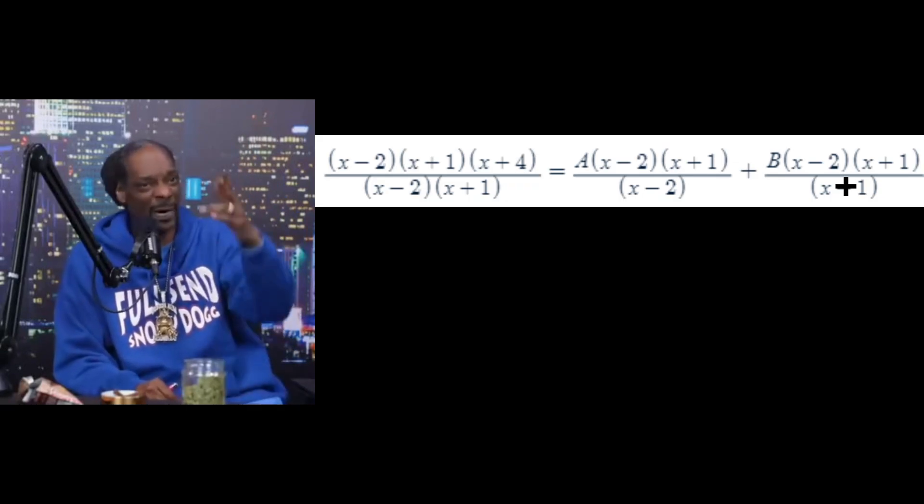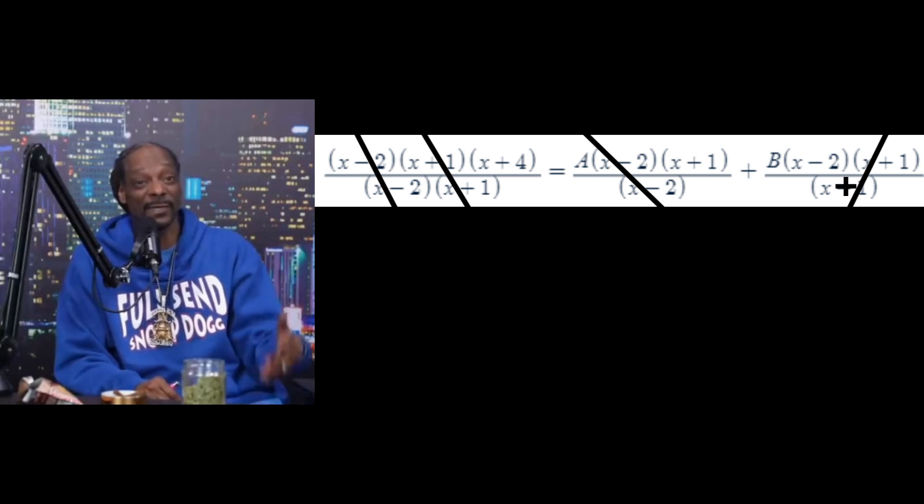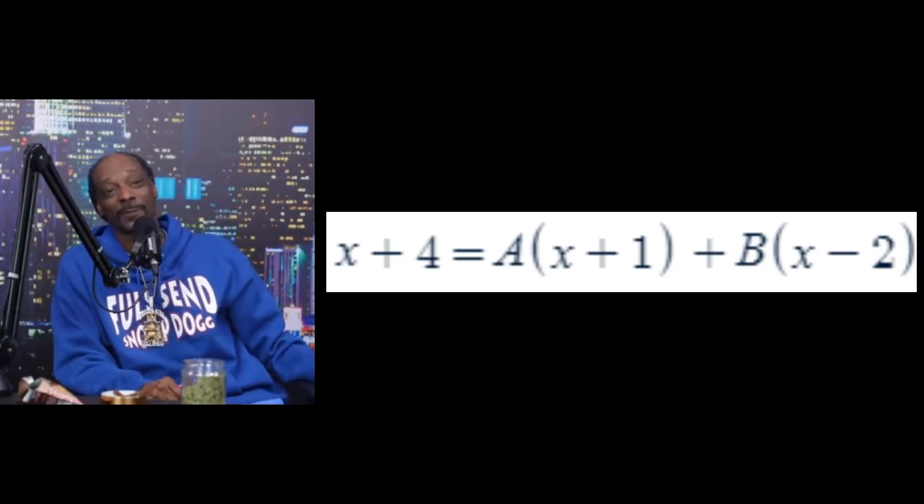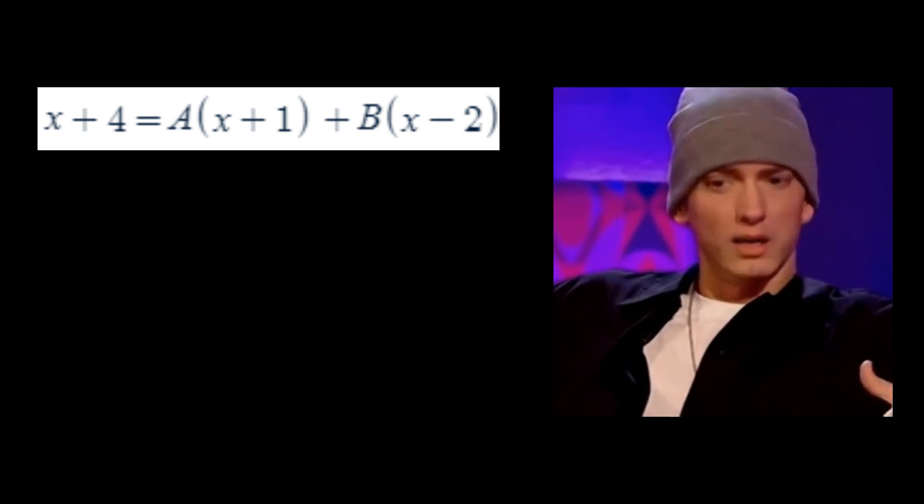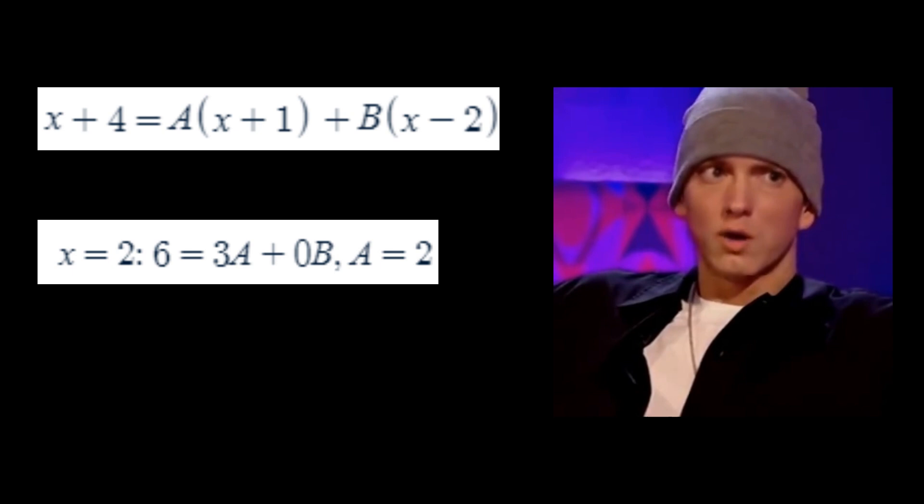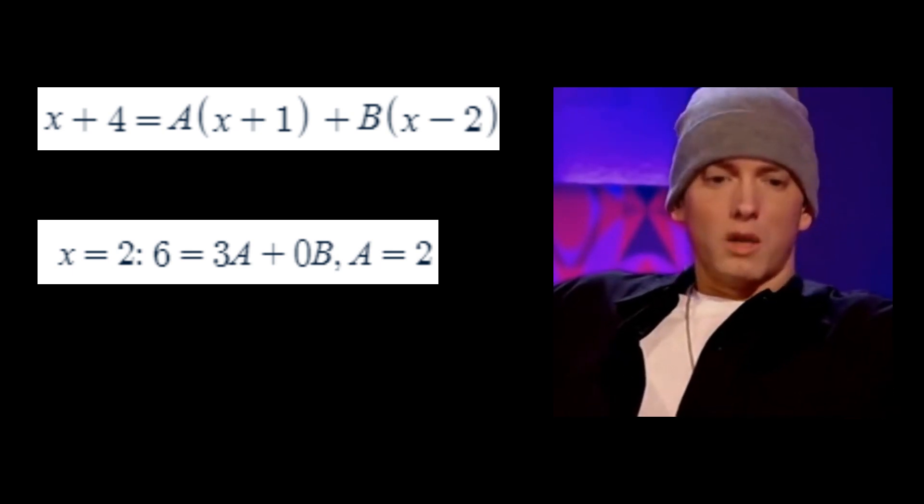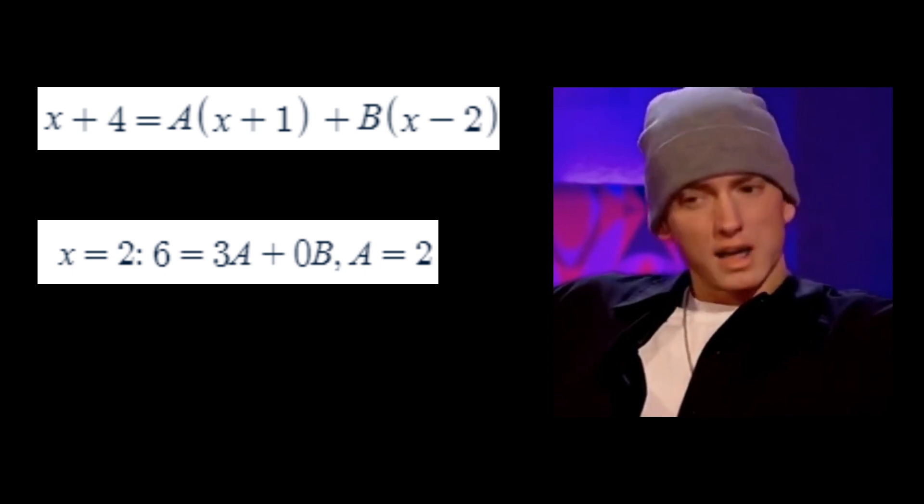Let's multiply by the unfactored denominator to simplify. This gives us the following simplification because we can cancel the common factors in the numerator and denominator. We have the equation x plus 4 equals A times x plus 1 plus B times x minus 2. Let's now strategically pick x values to remove either A or B from the equation. If we set x equal to 2, the B term will be eliminated because we are multiplying it by zero. This gives us 6 equals 3A, so A equals 2.